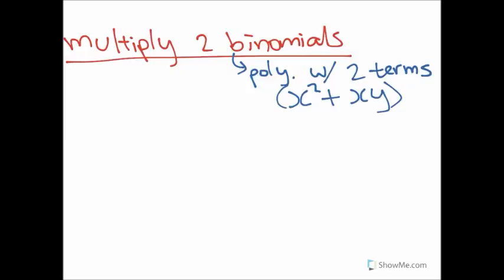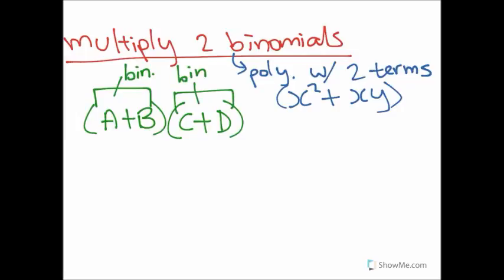When this happens, we can use a special formula to make things easier. Let's say that a represents our first term, b represents our second term, c is another term, and d is another term. So, each of these individually is a binomial. We want to multiply them together.